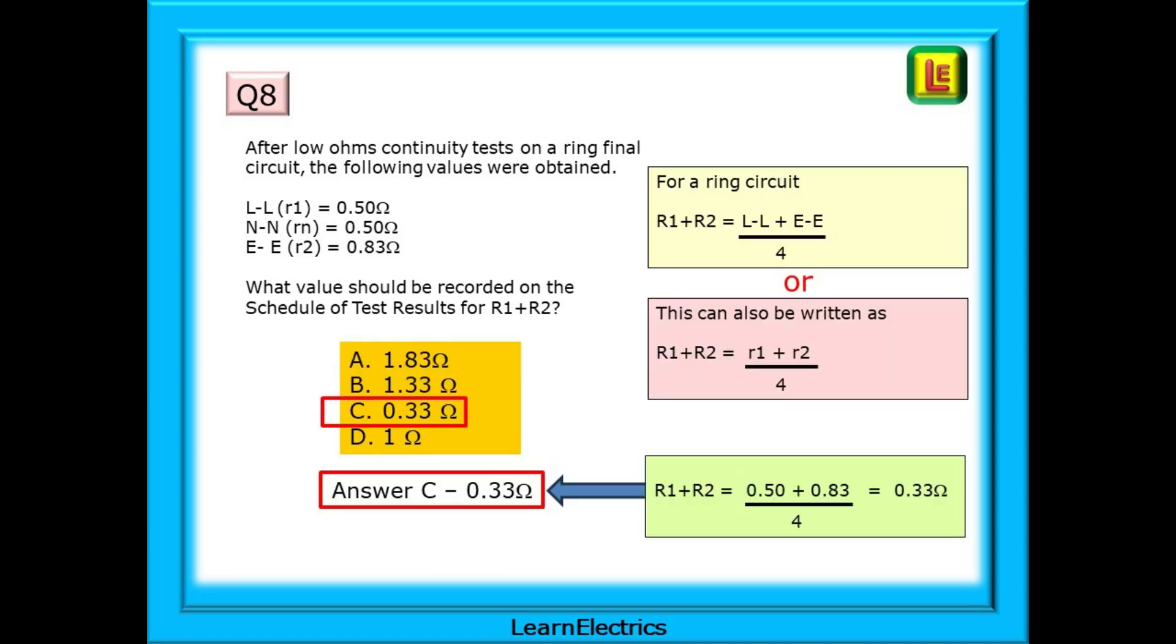Answer C should be your choice. Some books will show the formula as L to L and E to E divided by four. Others will show it as little R1 plus little R2 divided by four. So we have 0.5 plus 0.83 and then divided by four. This will give us the answer of 0.33 ohms.